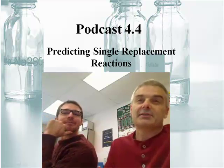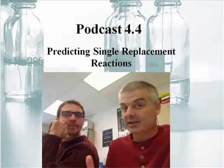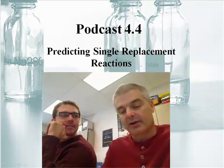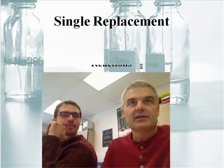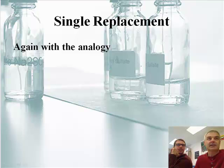All right. Single replacement reactions, we have to decide if the reaction takes place and if it does, we have to figure out what the products are. So we're going to learn how to predict the products of the reaction. Now, the key thing to understand this, we already talked about this analogy. So basically, the best looking guy gets the girl. That's the key. The best looking guy gets the girl.